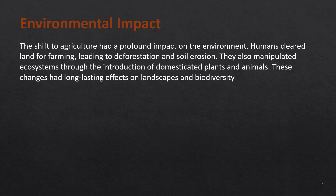Environmental Impact. The shift to agriculture had a profound impact on the environment. Humans cleared land for farming, leading to deforestation and soil erosion. They also manipulated ecosystems through the introduction of domesticated plants and animals. These changes had long-lasting effects on landscapes and biodiversity.